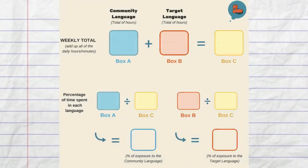First, add the number of hours the child has been exposed to the community language in box A. Then, you will do the same for the target language in box B.